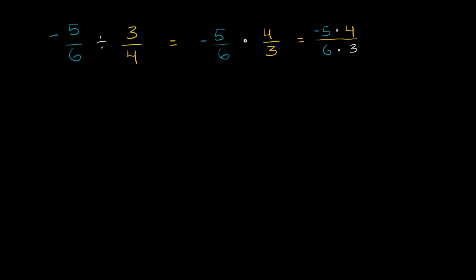Now in the numerator here, you see we have a negative number. You might already know that 5 times 4 is 20. And you just have to remember, we're multiplying a negative times a positive. We're essentially going to have negative 5 four times. So negative 5 plus negative 5 plus negative 5 plus negative 5 is negative 20. So the numerator here is negative 20.